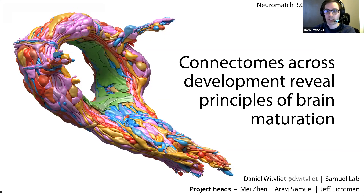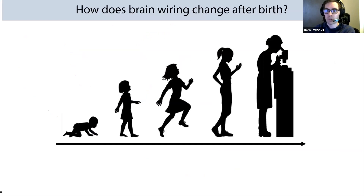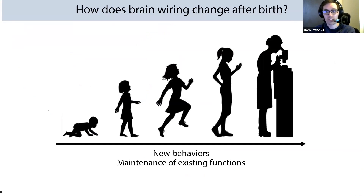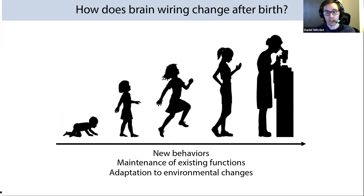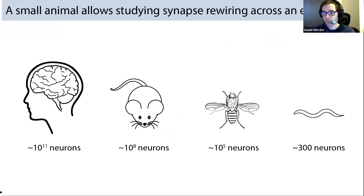The question we've been trying to answer is how brain wiring changes throughout life. During development, the nervous system faces multiple challenges: new circuits need to be built to support new functions, existing circuits need to be maintained despite constantly changing anatomy, and circuits must be optimized to a fluctuating environment. It's really poorly understood how neural circuits change across the brain to cope with these challenges, because that would require mapping entire synaptic wiring diagrams across multiple life stages.